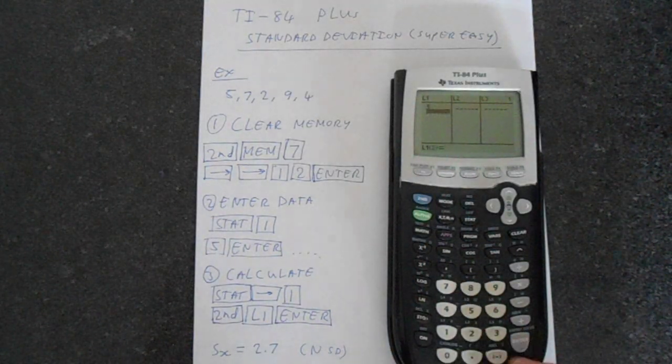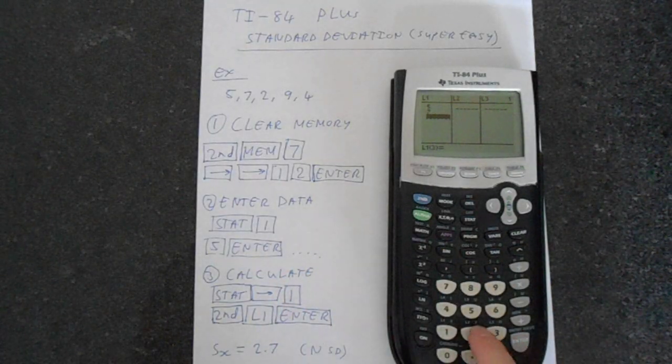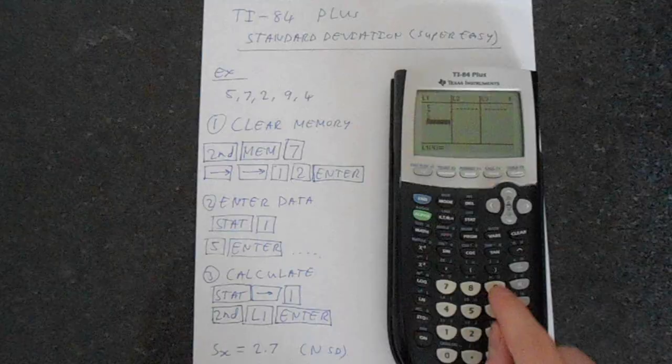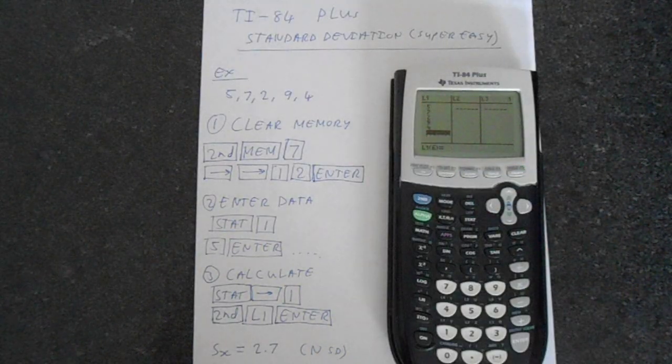So we've got five and then enter and just continue with this with the other data. So we've got two, nine and four. So that's list one full.